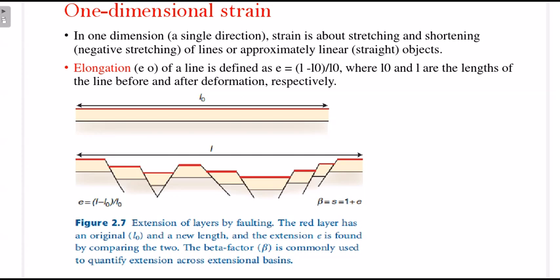Now we will talk about one-dimensional strain — elongation, stretching, quadratic elongation, and natural strain. But let's wrap up this lecture since it has already been about half an hour. We will talk about one-dimensional strain in Part 2 and cover more aspects of structural geology. This is it for the first lecture — I hope it is clear what structural geology is and what deformation is. In upcoming lectures we will talk about more parts of strain. Till then, stay safe, and if you liked this lecture, don't forget to subscribe and comment below. Thank you.